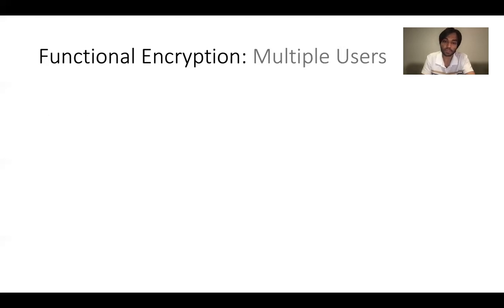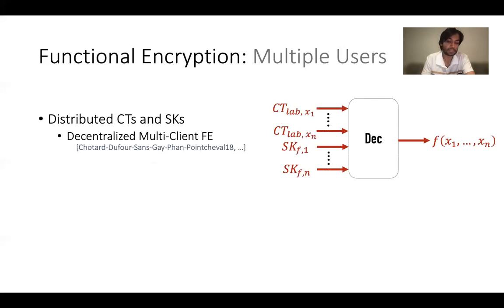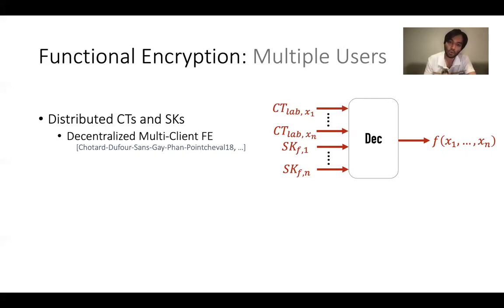There has been a lot of recent progress on distributing both ciphertexts and secret keys. The first work in this line, by Chowdhar et al., defined a decentralized version of multi-client functional encryption combining two previously defined multi-user systems. In such systems, we have a polynomial number of ciphertexts and secret keys. These ciphertexts and secret keys can be combined to learn the evaluation of a function f on inputs x1 through xn, as long as the labels of the ciphertexts match.